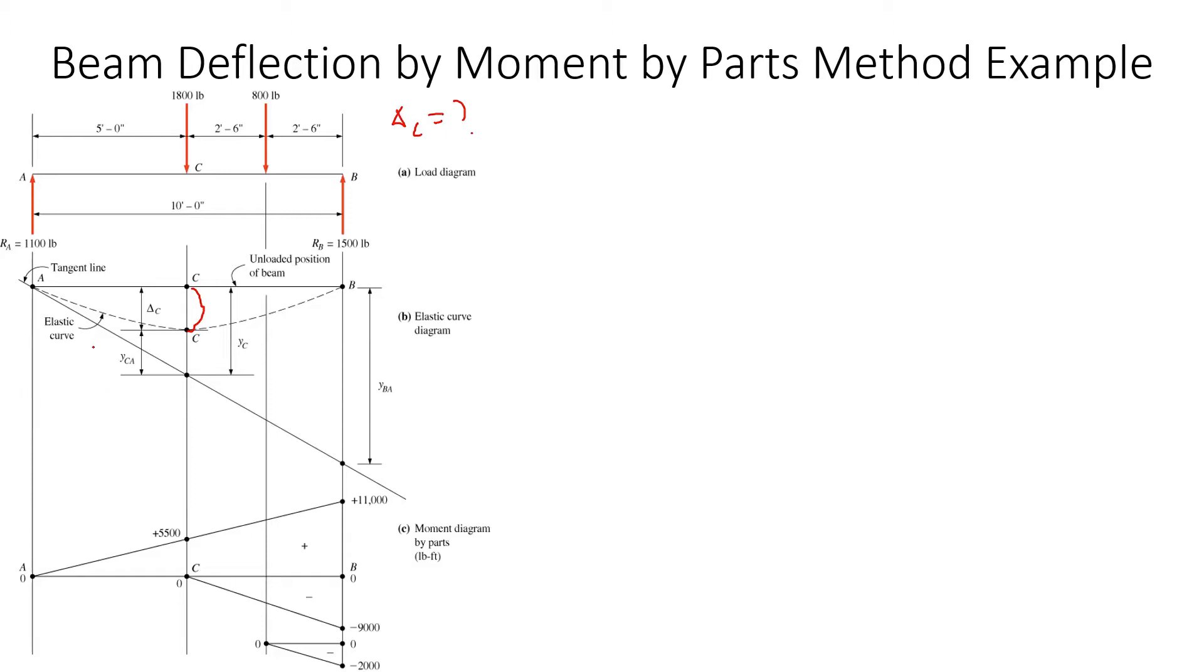For example, the reaction at A creates the big triangle with moment of 11,000. Then this load at C of 1,800 pounds creates the moment of 9,000, and that's negative. You can check those videos where I show how to calculate moments.